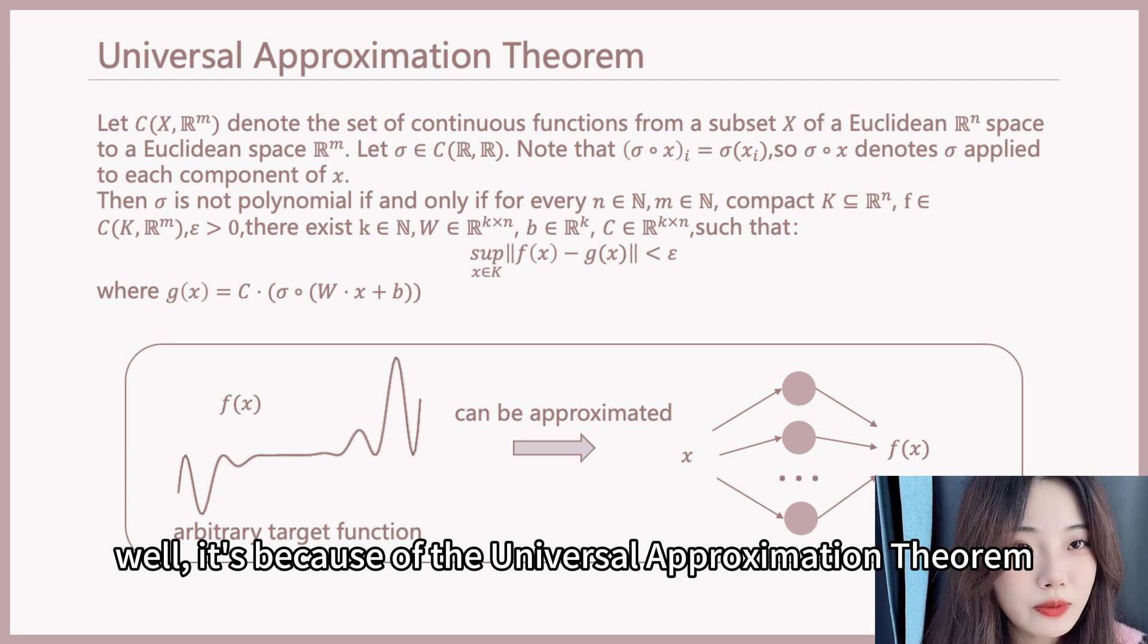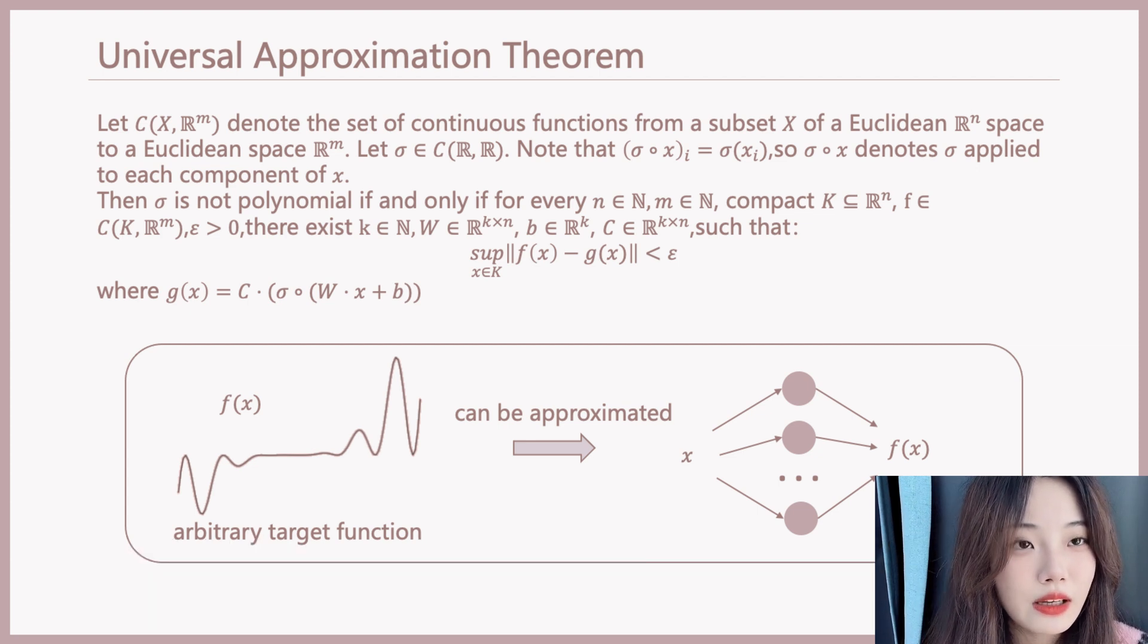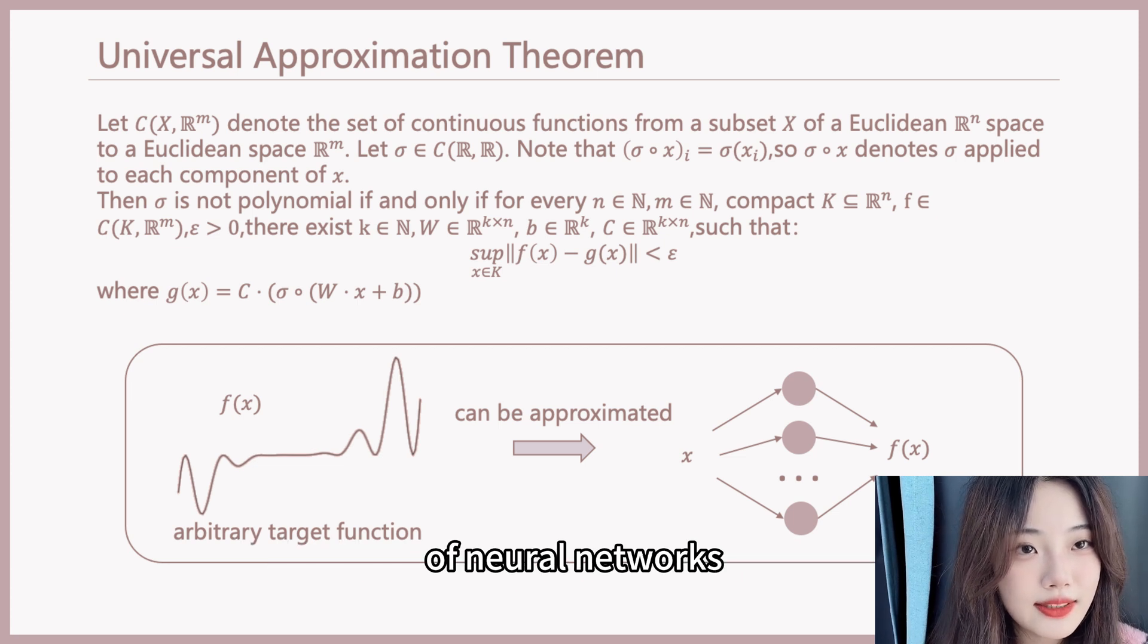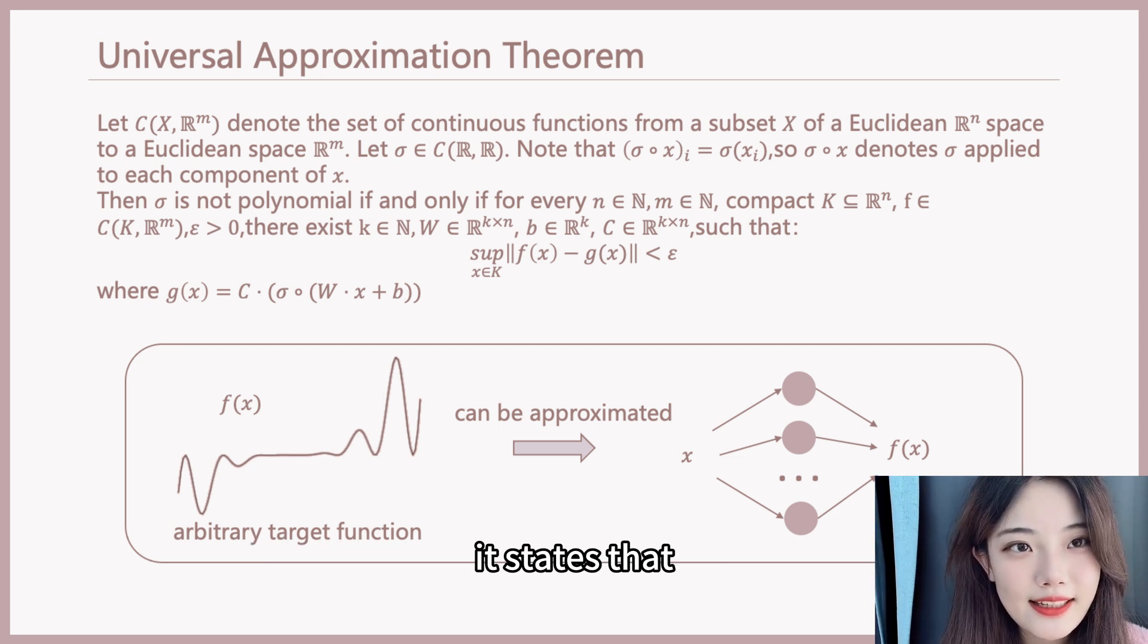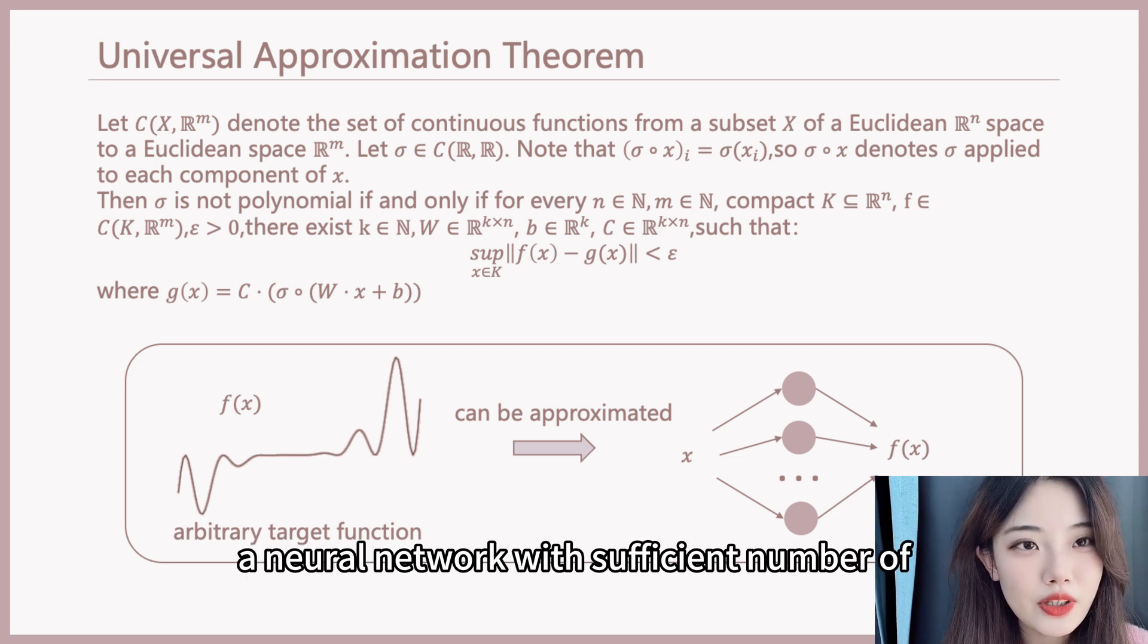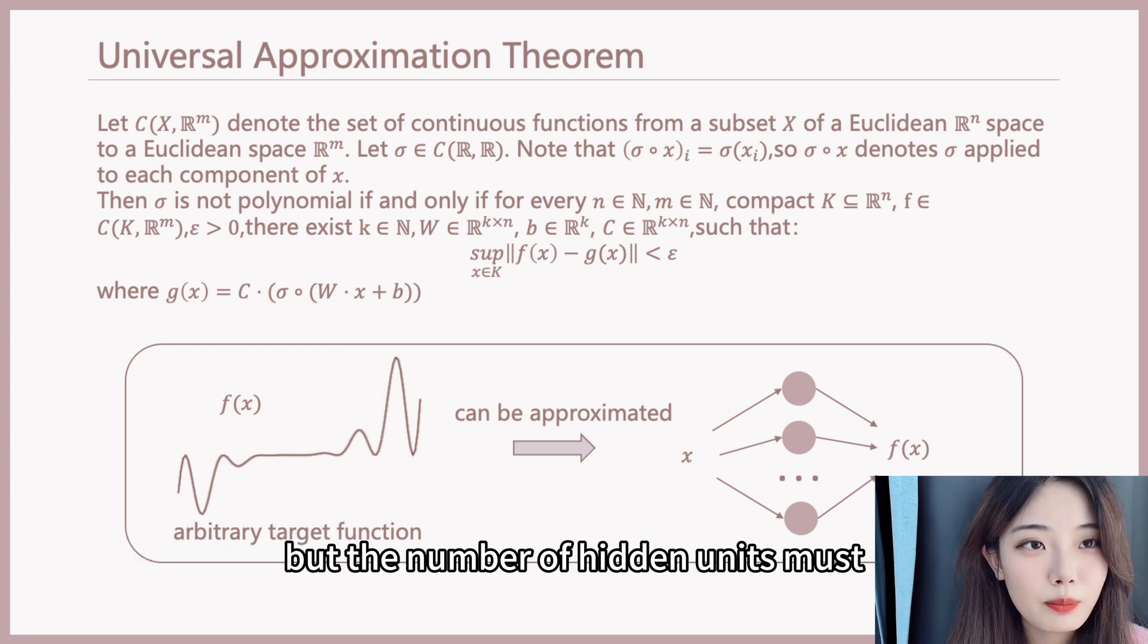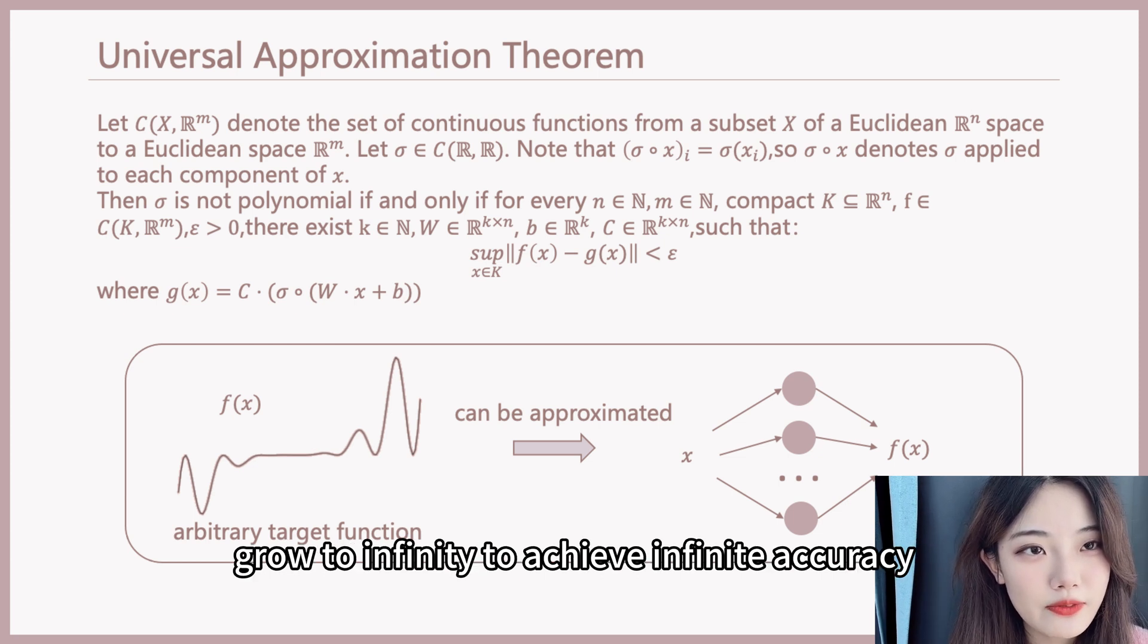Well, it's because of the universal approximation theorem, which is the underlying mathematical principle of neural networks. It states that a neural network with sufficient number of hidden units can approximate any continuous function arbitrarily well. But the number of hidden units must grow to infinity to achieve infinite accuracy.